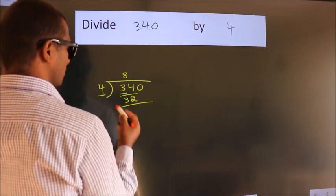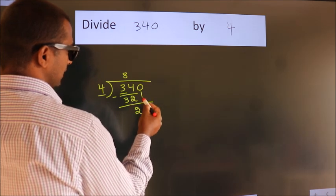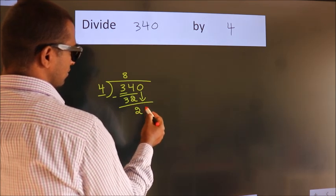Now we should subtract. We get 2. After this, bring down the next number. So 0 down.